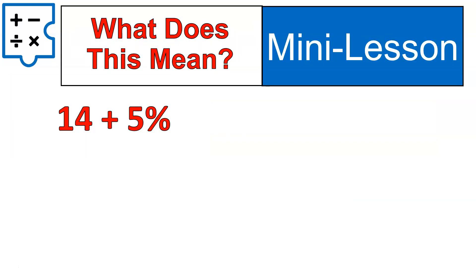First off, 14 plus 5%, what does that mean? It does not mean 14 plus, and then you convert that 5% into a decimal, 0.05, and you just add those numbers. And that's why this type of question is a little bit more confusing. What it does mean is 14 plus 5% of 14. And that's important, because that 5% doesn't specifically say it's 5% of 14.